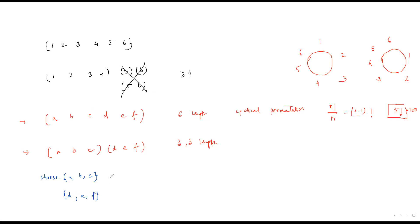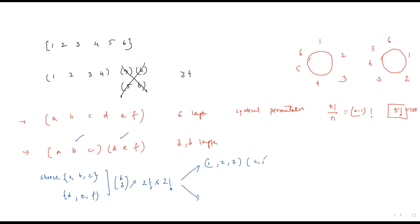But there's a small catch: choosing ABC first and DEF second gives the same permutation as choosing DEF first and ABC second. We are over-counting these pairs of 3-cycles by a factor of 2. So we divide by 2 to correct the over-counting.